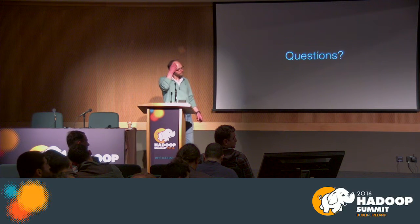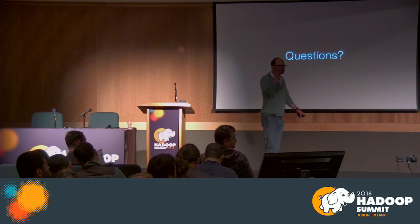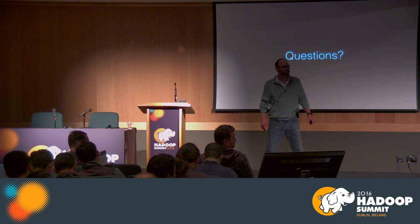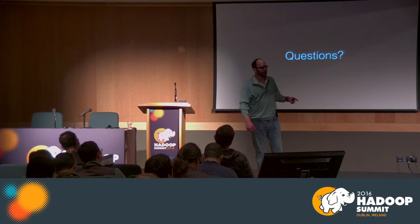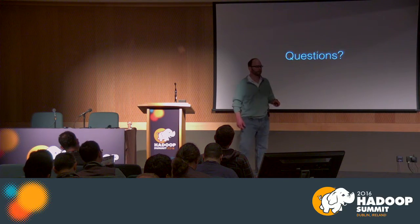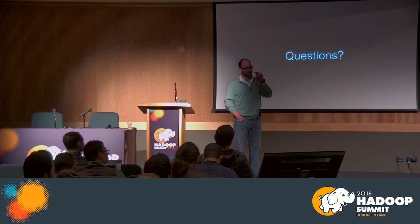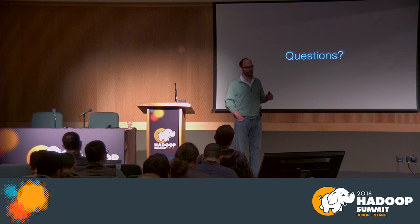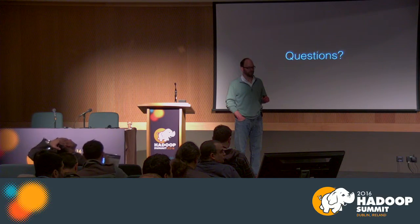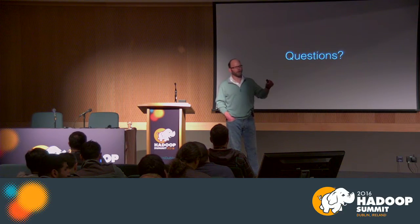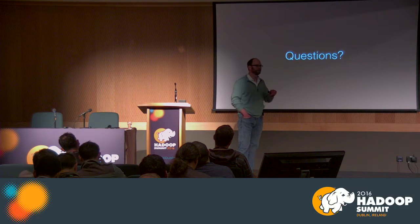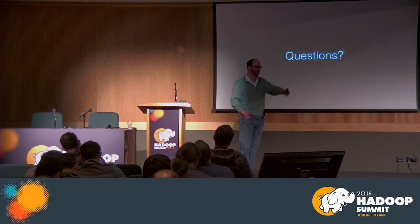Q: Because Storm does not provide exactly-once, how do you ensure that the windowing and state features are accurate? A: Storm actually does do exactly-once if you use the Trident API. If you require exactly-once, that's probably a problem — you should avoid requiring it if you can, and make your operations idempotent. In reality, exactly-once doesn't really exist.